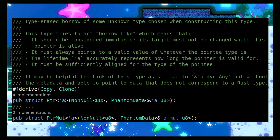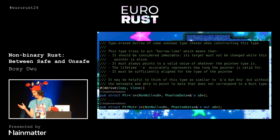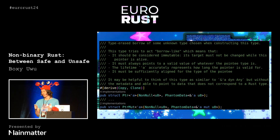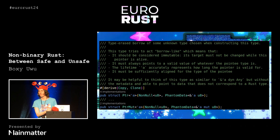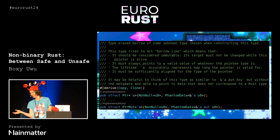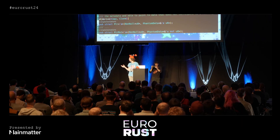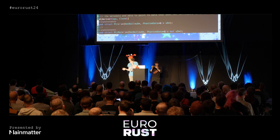PhantomData tends to pop up a lot when writing these kinds of abstractions, because we have this lifetime that we're not using, and PhantomData is scary — it's easy to get wrong. Typically what you want to do is go back to thinking about what type you would have written in safe code. Here, maybe you'd write a borrow of a trait object, but since the trait object part doesn't really matter, we're just using a borrow of a unit type.